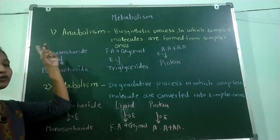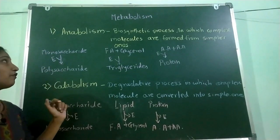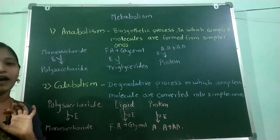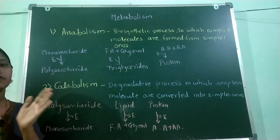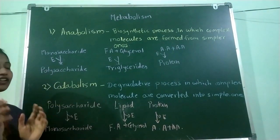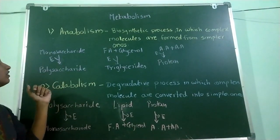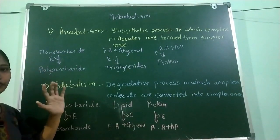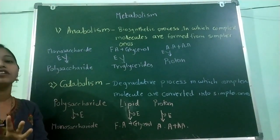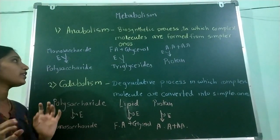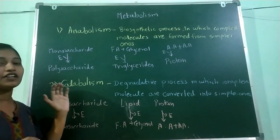Metabolism is divided into two types: anabolism and catabolism. Anabolism is a biosynthetic process in which complex molecules are formed from simple ones. For example, polysaccharides are formed from monosaccharide units — for example, starch is formed from many glucose units. In this process, energy is required, or energy is utilized.